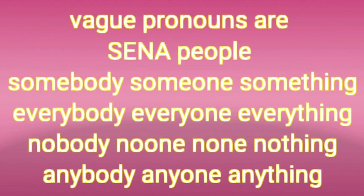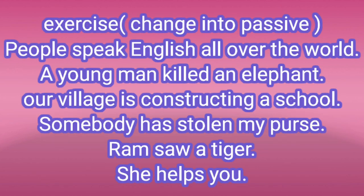For example, 'Somebody stole my purse' — the passive is 'My purse was stolen,' and 'by agent' is not mentioned because 'somebody' is a vague pronoun with an unclear subject. Vague pronouns include: somebody, someone, something; everybody, everyone, everything; nobody, none, nothing; anybody, anyone, anything; and 'people.' We need not use 'by agent' with these.